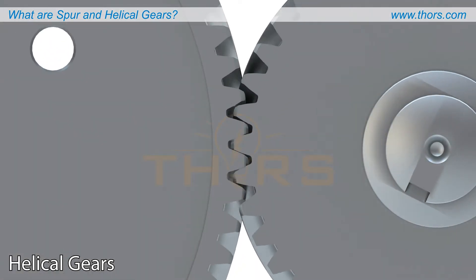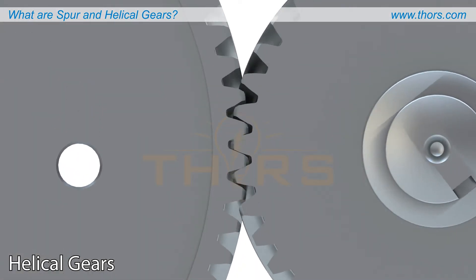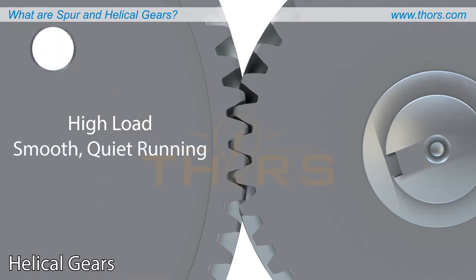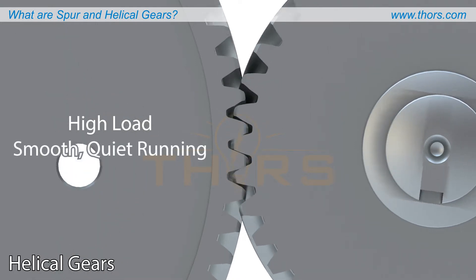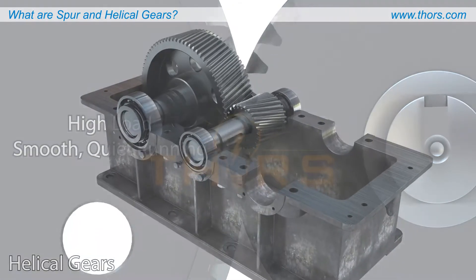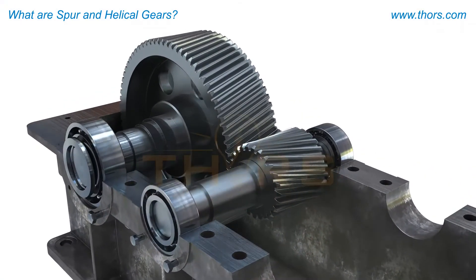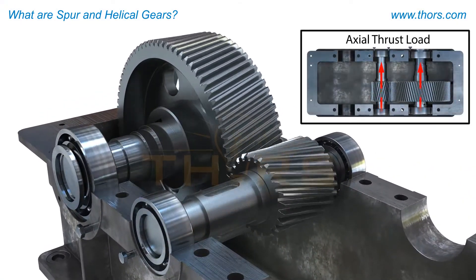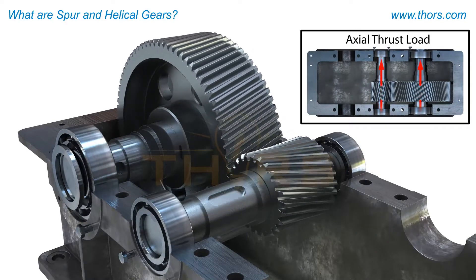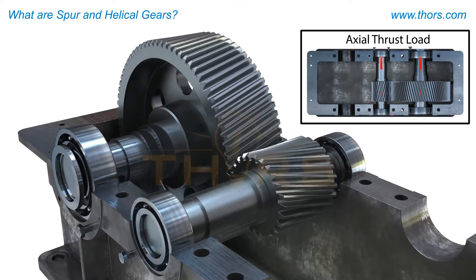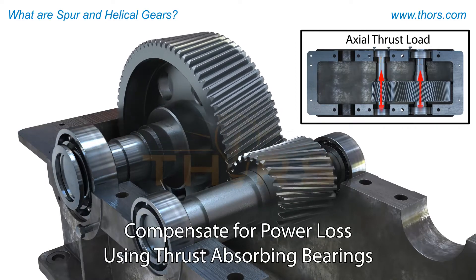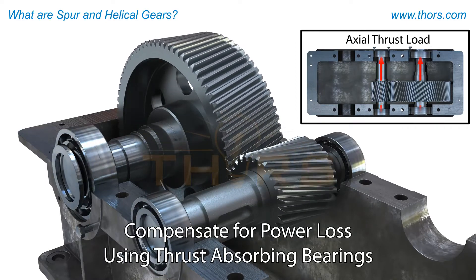Typically, helical gears are preferred over spur gears for highly loaded applications and when smooth, quiet running is essential. Helical gears can carry more load since the load is shared by multiple teeth, but impart an axial thrust load on bearings, leading to power losses that need to be compensated by using thrust absorbing bearings.